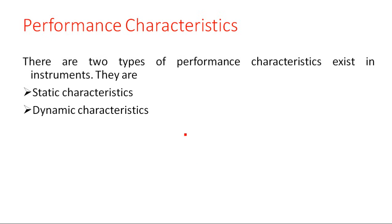For any instrument, there are some specific characteristics known as performance characteristics. These performance characteristics determine the behavior of any instrument. There are two types of performance characteristics depending upon whether the instrument is operating with respect to time or without time. These are static characteristics and dynamic characteristics. Static characteristics refer to instruments which have unvarying process conditions.